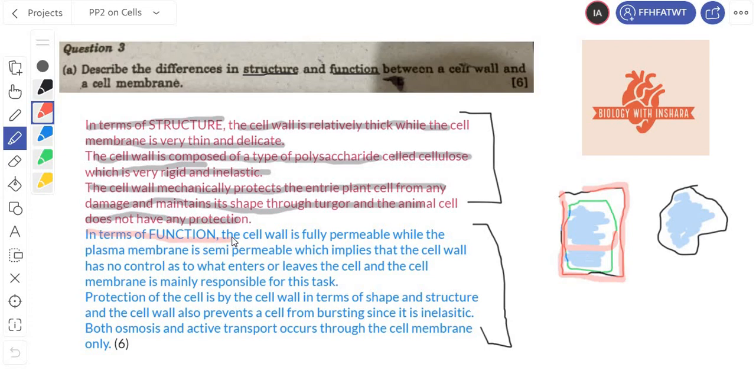Now in terms of function, the cell wall is fully permeable, which means it can allow anything to enter it, while the plasma membrane is semi-permeable, which implies that the cell wall has no control as to what enters or leaves the cell, and the cell membrane is mainly responsible for this task. Now the cell wall can allow anything to enter it, so it is not in control of what enters and exits the cell. That is actually the cell membrane's task. It is semi-permeable, which means it only allows certain substances to enter and exit the cell, and it is the cell membrane that is in charge of what enters or exits the cell. Protection of the cell is by the cell wall in terms of shape and structure, and the cell wall also prevents a cell from bursting since it is inelastic, as discussed here.